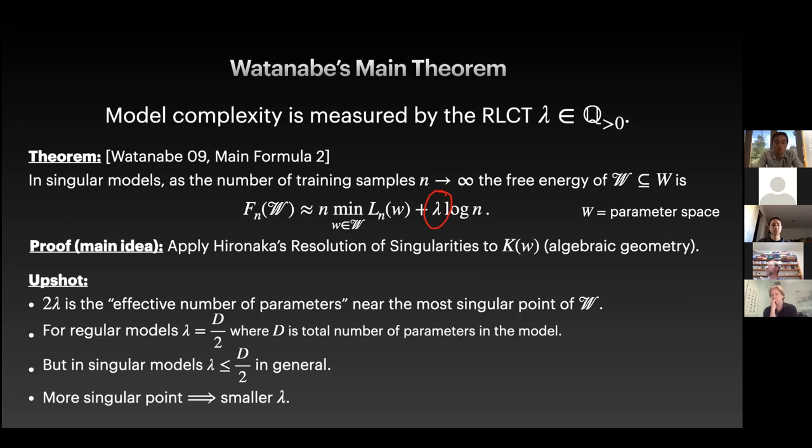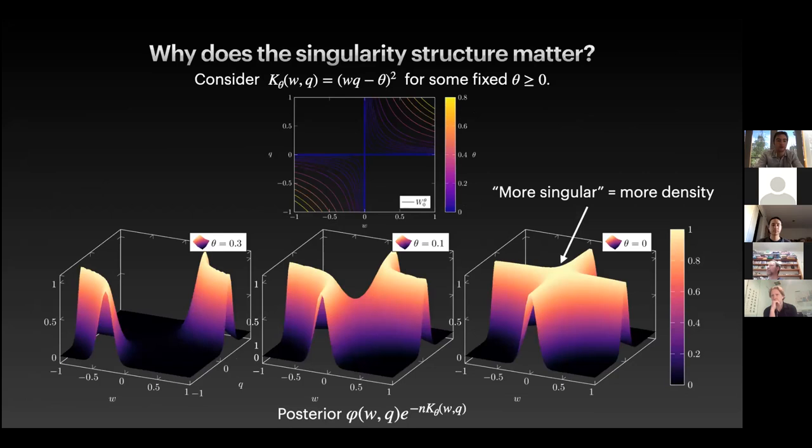So, the upshot here is the RLCT, or two times the RLCT, is the effective number of parameters near the most singular point of the subset that we are considering. So, in some cases, this is precisely equal to the rank of the Hessian. But in other cases, it may be even less than the rank of the Hessian. In regular models, the RLCT is equal to the total number of parameters divided by two. But in singular models, the RLCT is in general less than the total number of parameters divided by two. Finally, the more singular a point is, the smaller the RLCT is in turn. So, to give you some intuition for why a more singular point may be more preferred by the posterior, let's have a look at this example here.